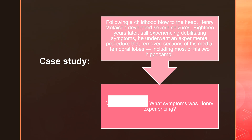The first thing we have for you today is a case study. Following a childhood blow to the head, Henry developed severe seizures. Eighteen years later, still experiencing debilitating symptoms, he underwent an experimental procedure that removed sections of his medial temporal lobes, which included most of his two hippocampi. What would happen if your hippocampus was injured or removed surgically? What symptoms would Henry be experiencing? Think about what your hippocampus does — hippocampi being plural for both the left and right hippocampus.